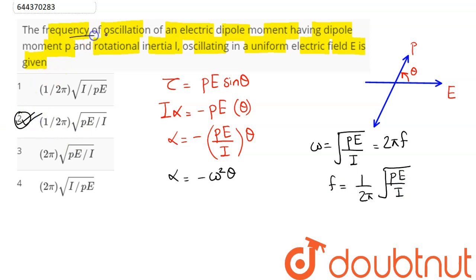the correct answer. That is, the frequency of oscillation of an electric dipole oscillating in a uniform electric field is equal to 1/(2π)√(pE/I). Option 2 is our answer.